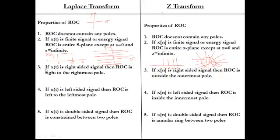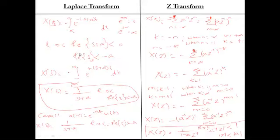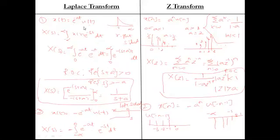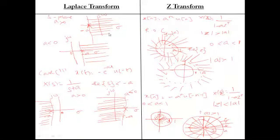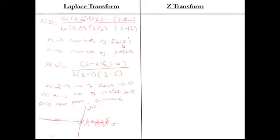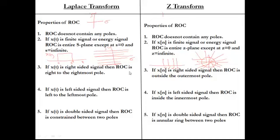Property 3: If X(t) is a right-sided signal, then ROC is to the right of the rightmost pole. For example, if X(s) = (s+2)/[(s+3)(s+5)], the poles are at −3 and −5; the rightmost pole is at −3, so the ROC is the region to the right of −3. If X(n) is a right-sided signal in Z-transform, then ROC is outside the outermost pole circle.